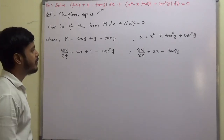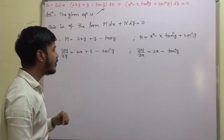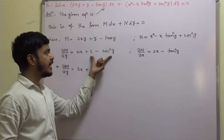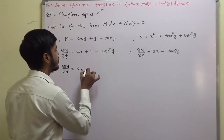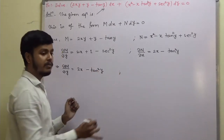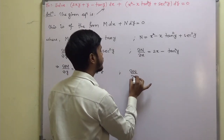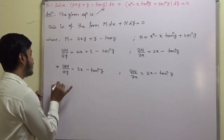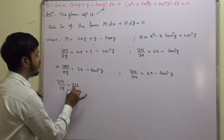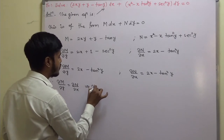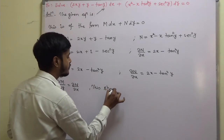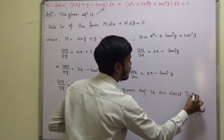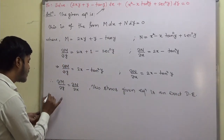Now look at del M by del y versus del N by del x. You can write del M by del y as 2x, and using the identity 1 minus secant squared y equals minus tan squared y, this becomes 2x minus tan squared y. And del N by del x equals 2x minus tan squared y. Since del M by del y equals del N by del x, the given equation is an exact differential equation and we can write its solution.